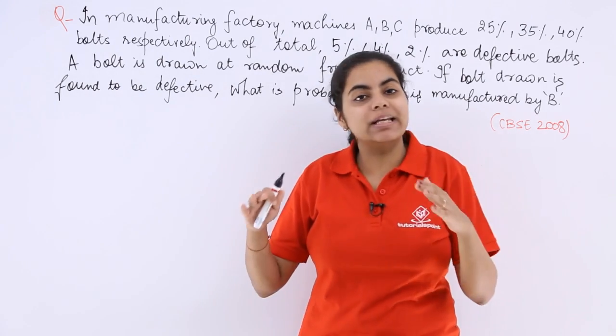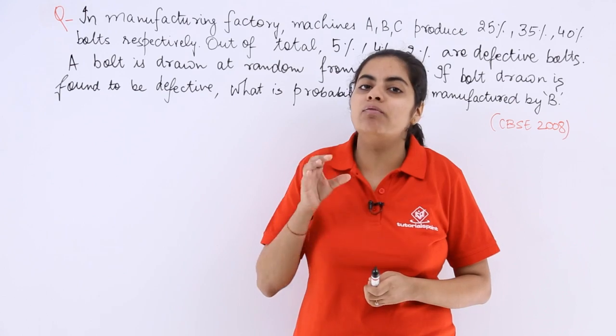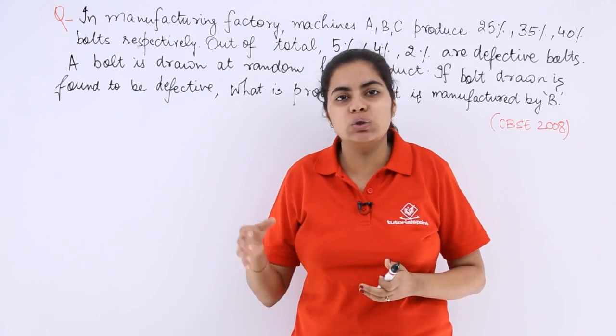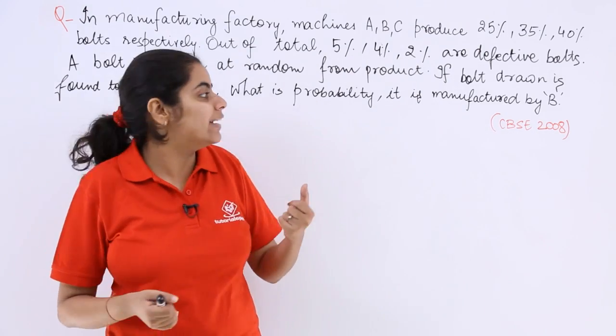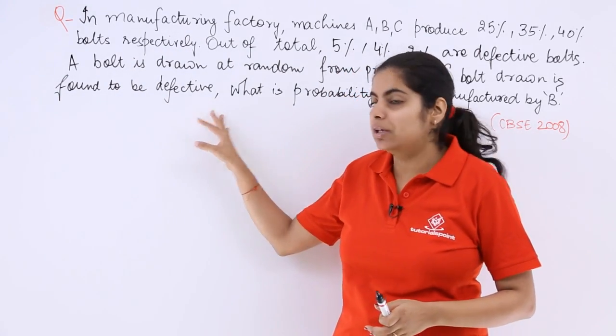You have been given the total number of bolts produced by machines A, B, C. Also you have been given what percentage is defective out of the total.